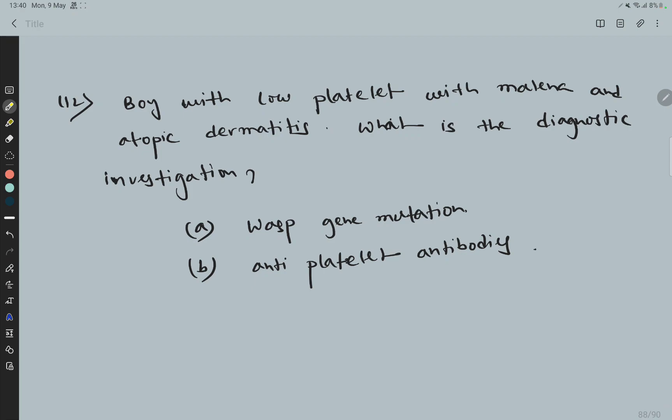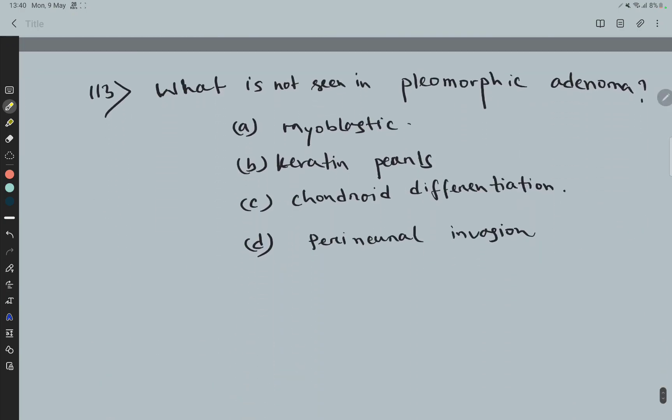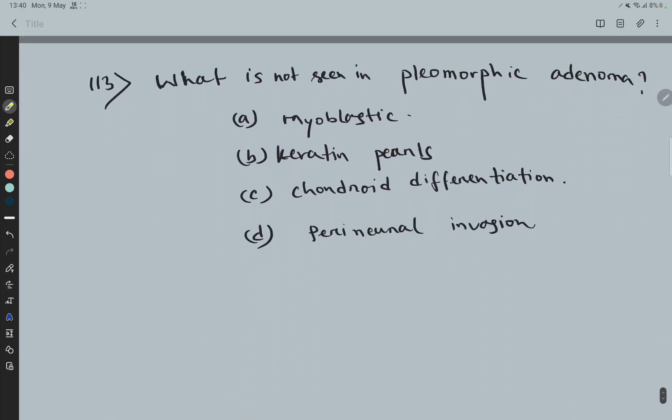...antiplatelet antibodies. Here the correct option is WASP gene mutation. Question 113: What is not seen in pleomorphic adenoma? Option (a)...